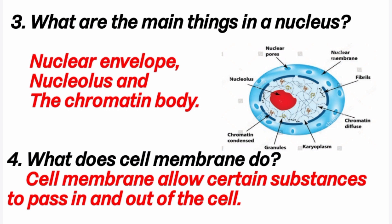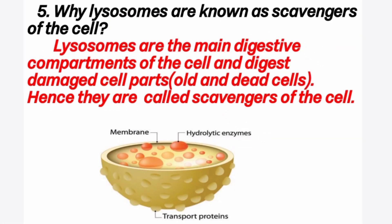Fourth question: what does the cell membrane do? Answer: cell membrane allows certain substances to pass in and out of the cell. Fifth question: why are lysosomes called scavengers of the cell? Answer: lysosomes are the main digestive compartments of the cell and digest damaged cell parts, especially old and dead cells. Hence they are called scavengers of the cell.